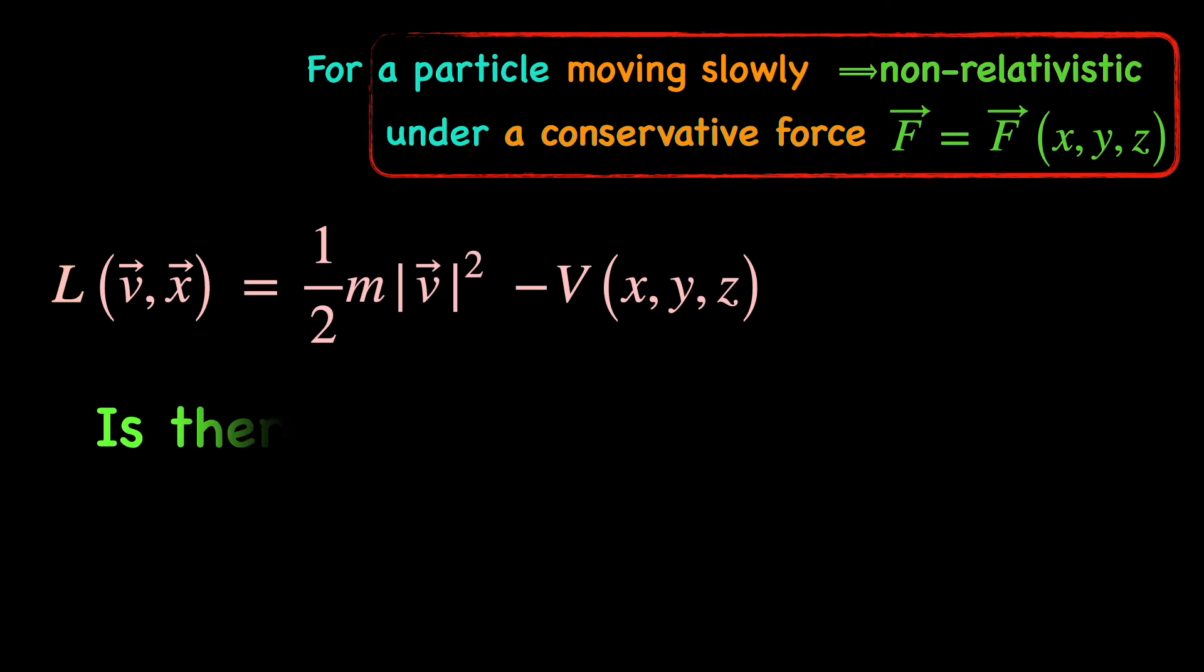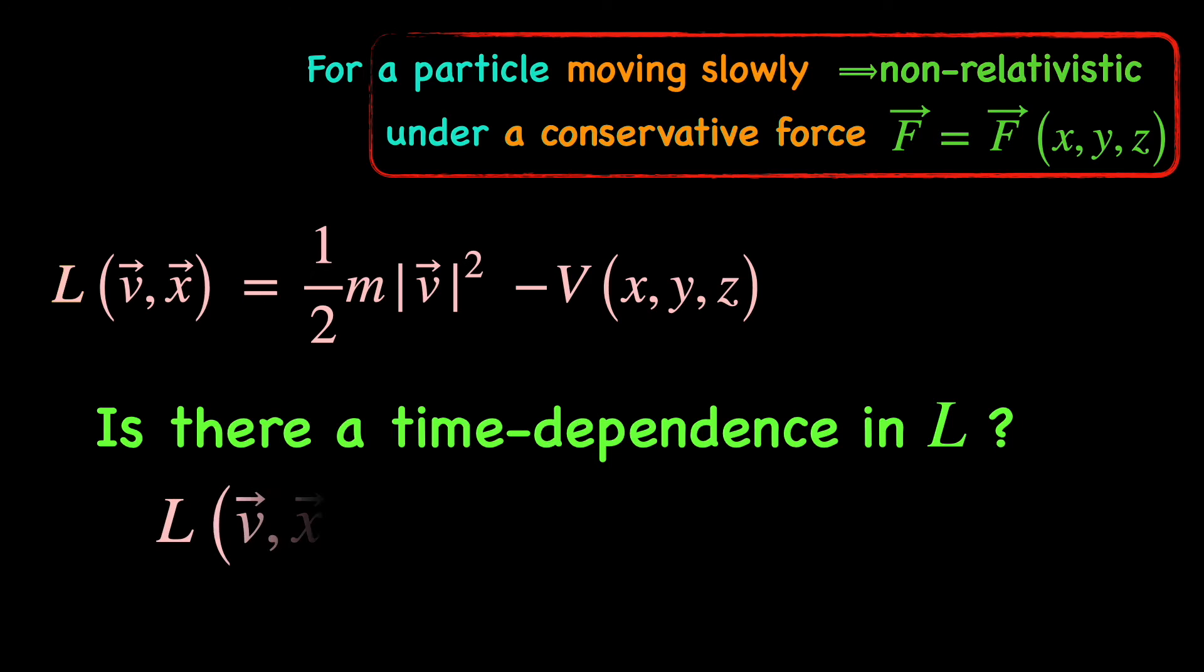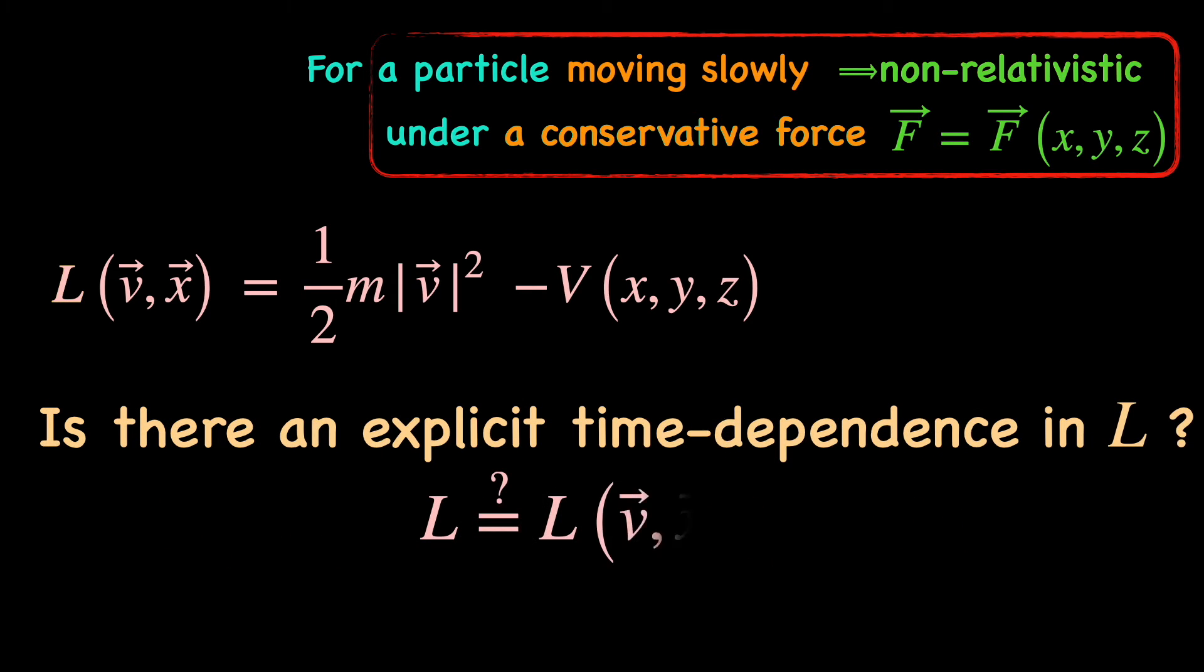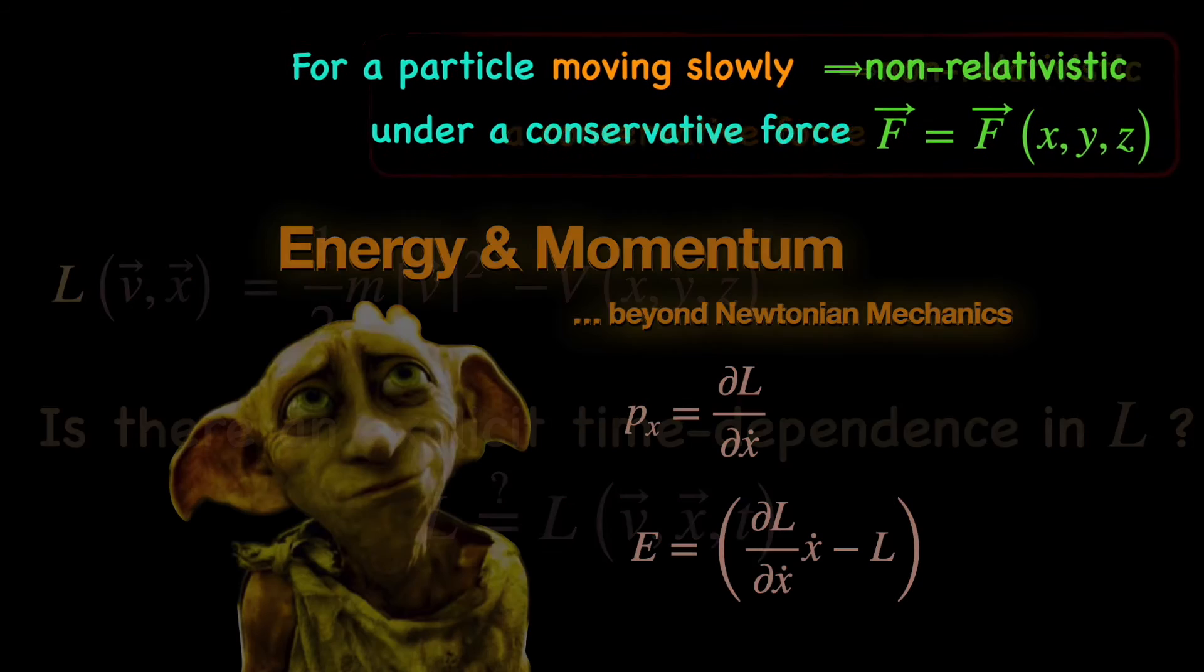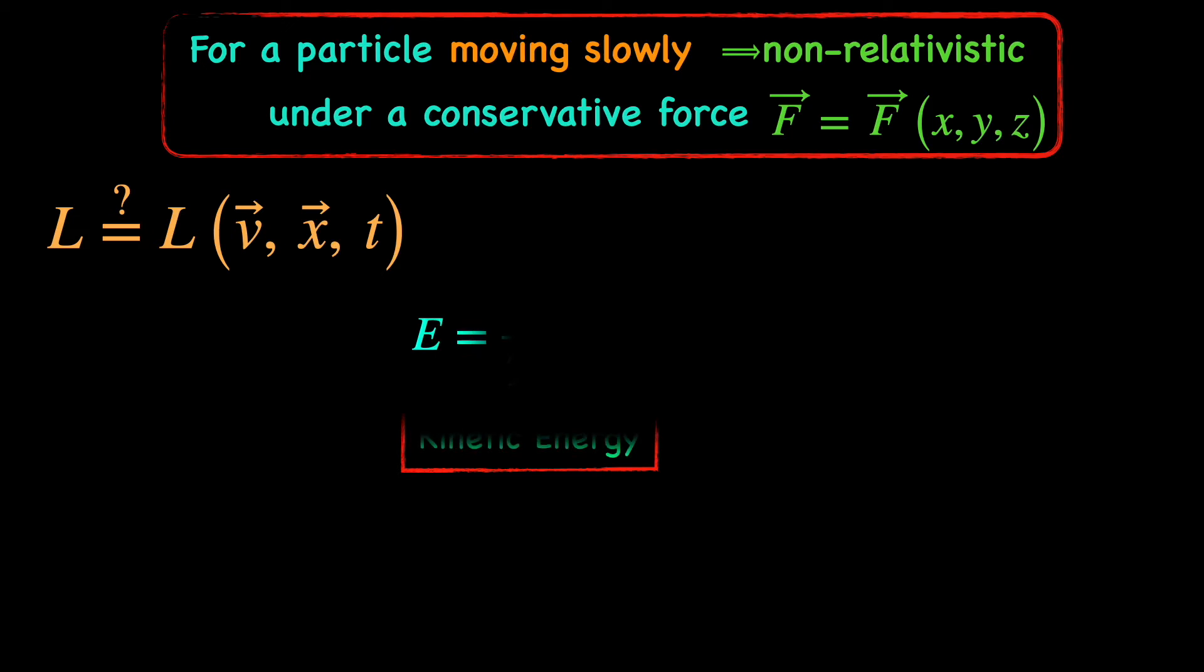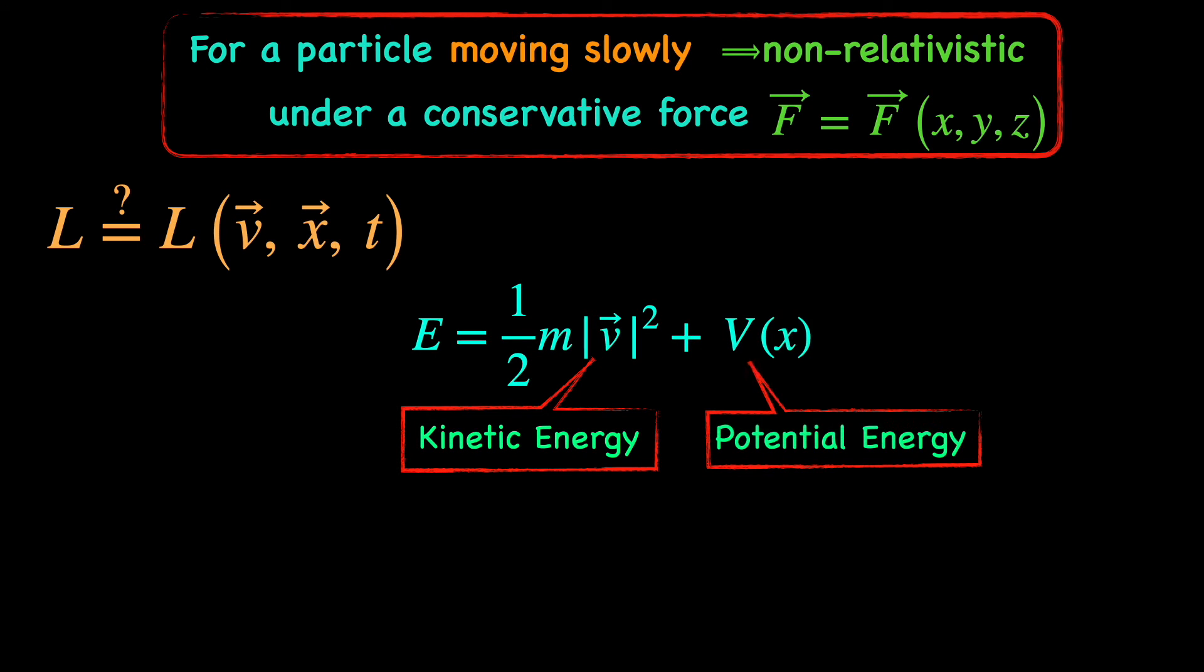Ok, but can the Lagrangian depend on time? Of course, since the velocity and position of the particle have implicit time dependence so does the Lagrangian. But can it have an explicit time dependence not through the position and velocity variables but T on its own? To answer this, again we have to refer to our last video. There we saw that when a non-relativistic particle is under a conservative force, the sum total of its kinetic energy and potential energy is a conserved quantity that we call its mechanical energy. In fact, the force is called conservative because the mechanical energy is conserved. But we know that conservative force means dependence on the space coordinates only. So, the Lagrangian of the particle also depends on the space coordinates exclusively but cannot have any explicit time dependence.